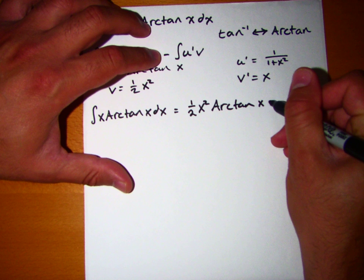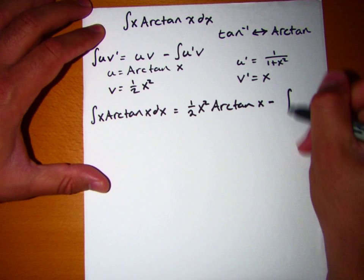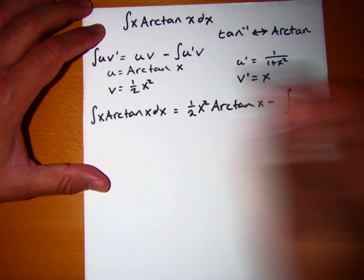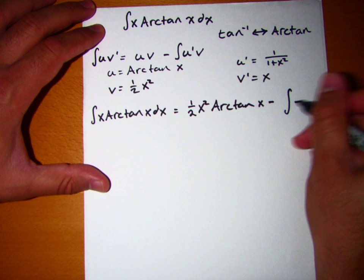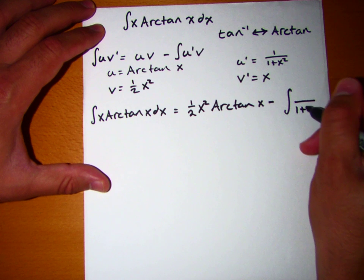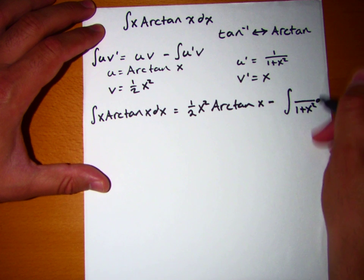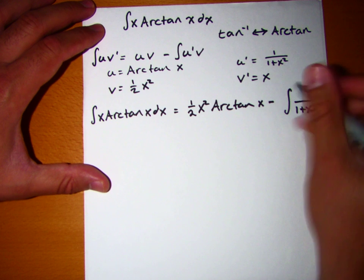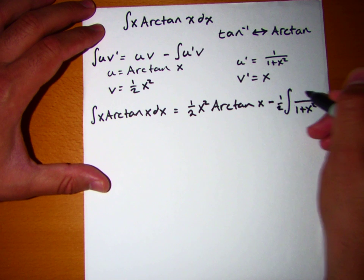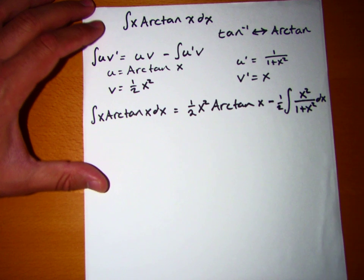The integral of u' v. So this integral is going to be, so we know u' is equal to 1 over 1 plus x squared, and we know that v is equal to 1 half x squared.